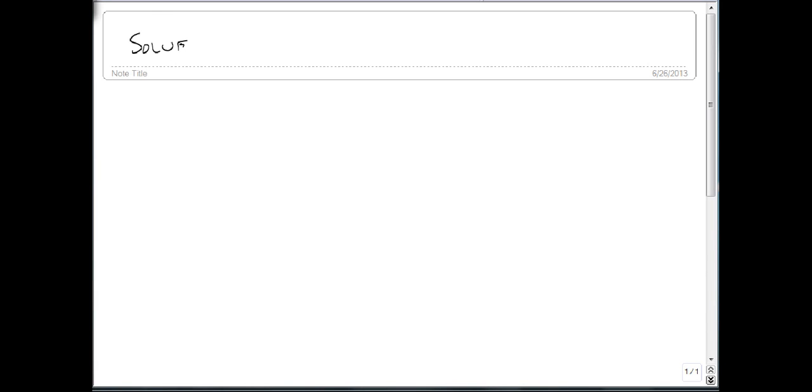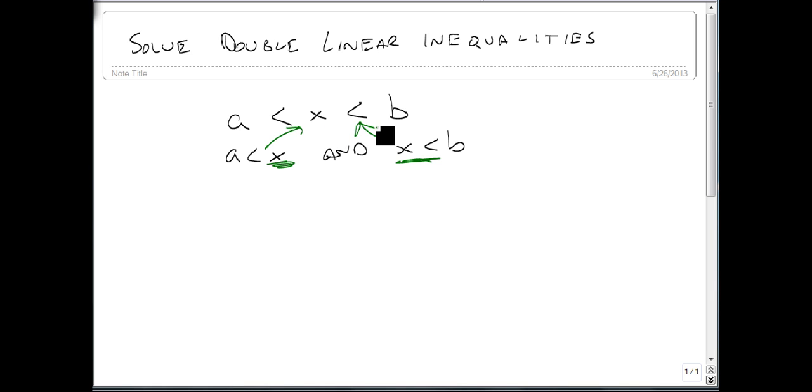We are now going to solve double linear inequalities. A double linear inequality is simply a type of AND statement, where we say A is less than X and X is less than B. And as long as this part's the same, then we can combine them to be a single inequality, which allows us a lot of freedom in solving the problems.